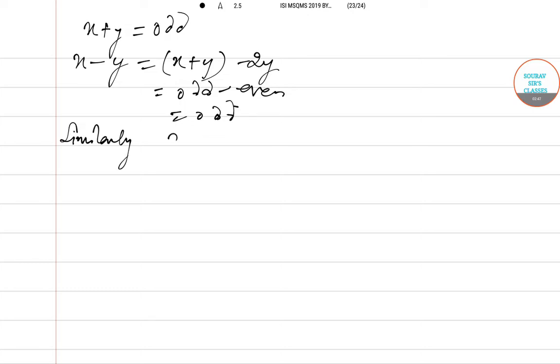Similarly, if X + Y is even, it means X - Y = (X + Y) - 2Y, that is even minus even, which equals even.